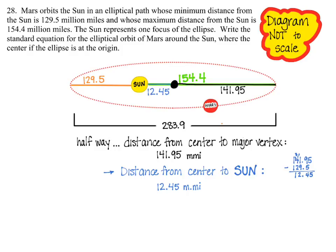We say, why do I need those numbers? Well, those numbers are the A and the C that we need for our equation. The distance from the center to a major vertex is going to be your A, and the distance from the center to the focus, this 12.45, is going to be my C.